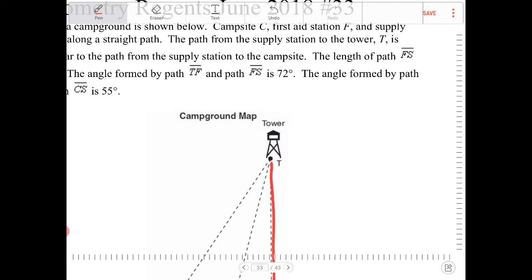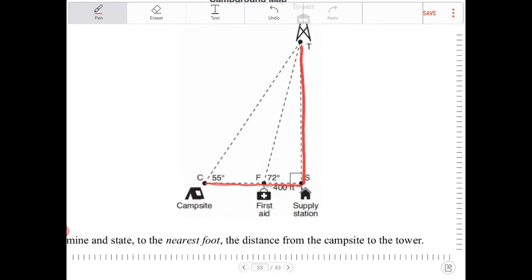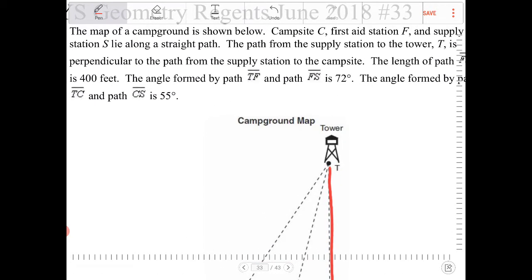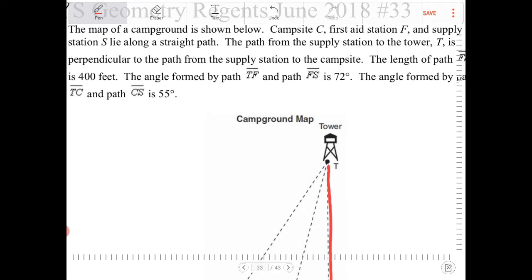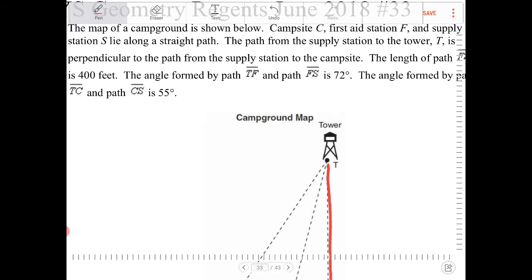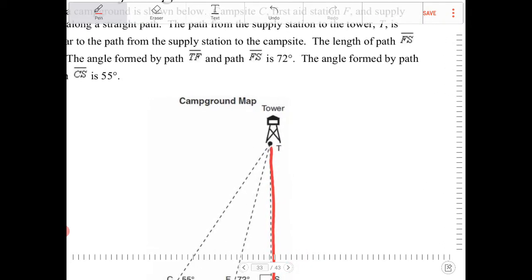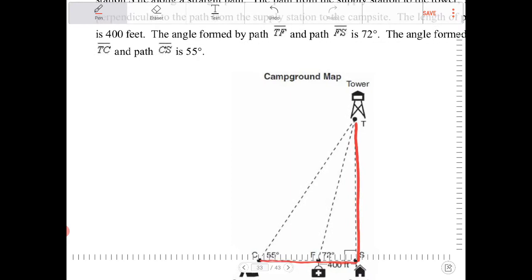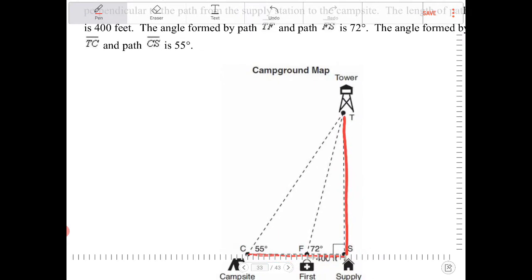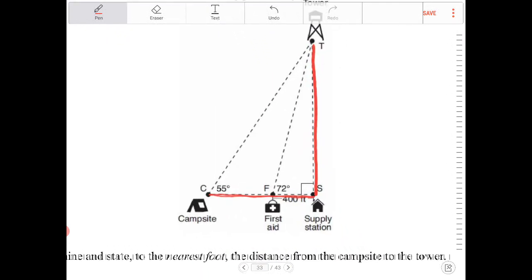The length of path FS is 400 feet, which is already labeled. The angle formed by path TF and path FS is 72 degrees. The angle formed by path TC and path CS is 55 degrees, which are all already labeled here.